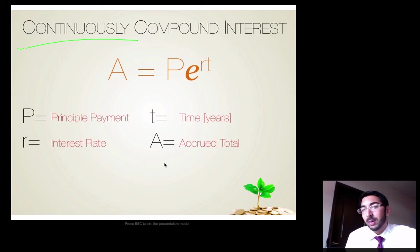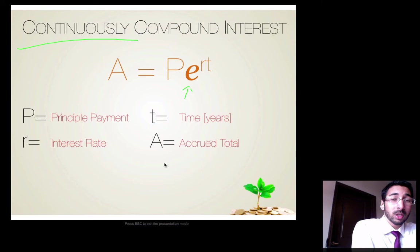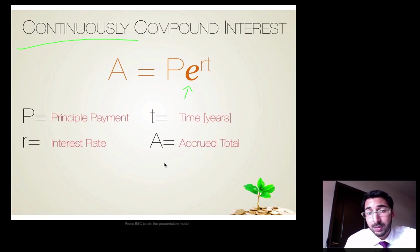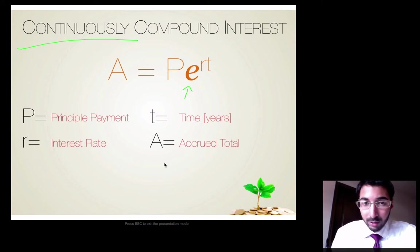And it's A equals PE to the RT. And some people just say PERT to remember very quickly. P is going to be our principal payment. So that's our initial amount. E, we already know what E is. That's not a variable. That's that natural base. And we have that button on our calculator actually. If you press second and the division key, that's your E key. We have R, which is our interest rate. T is the time in years. And A is going to be our accrued total, our final amount, our future value. So let's try a problem with this. Make sure you have this written down.